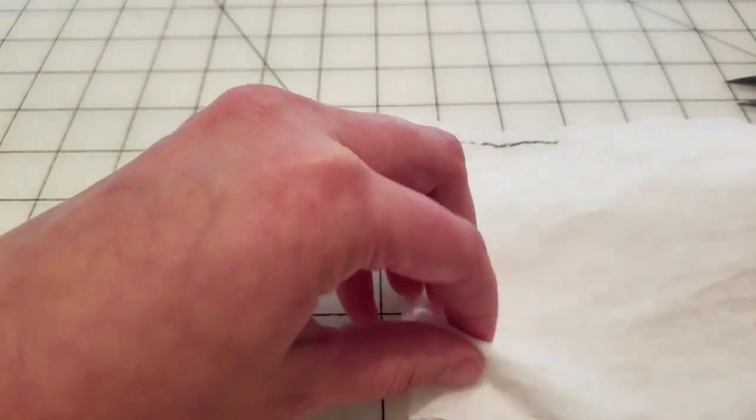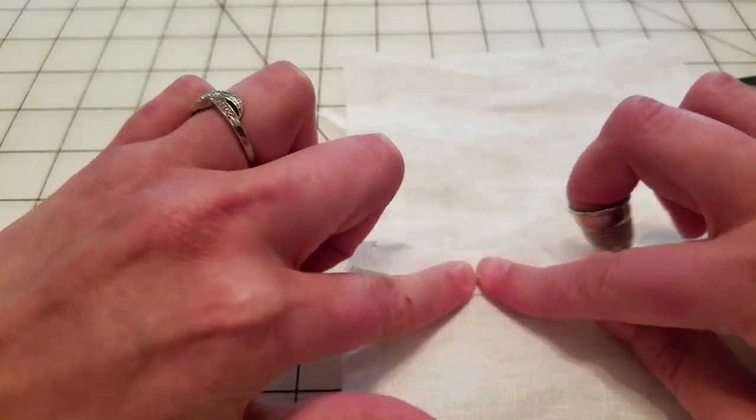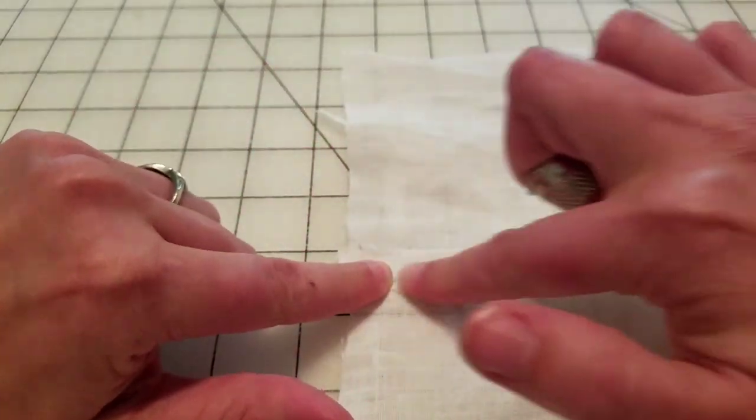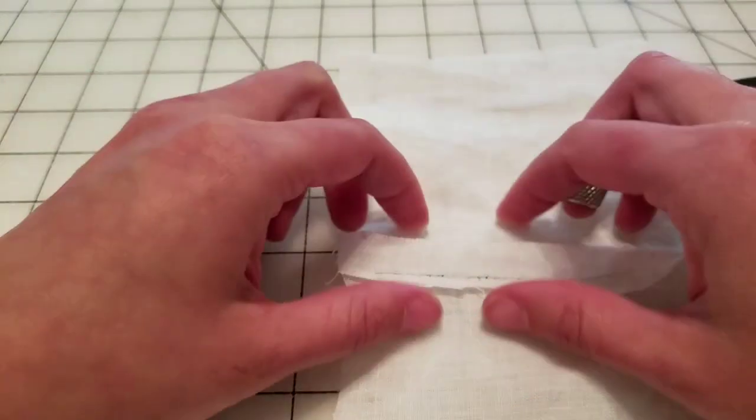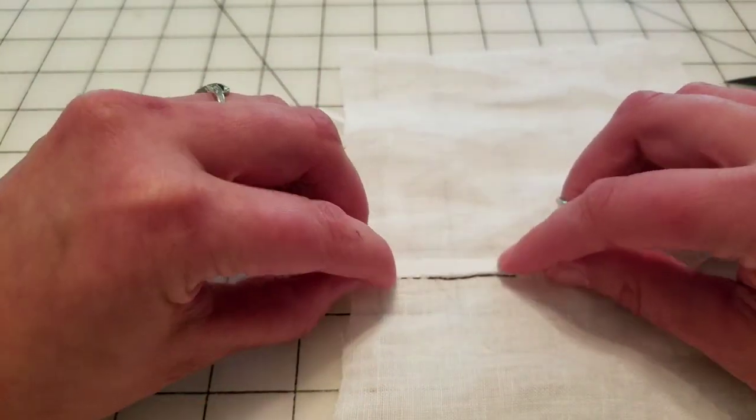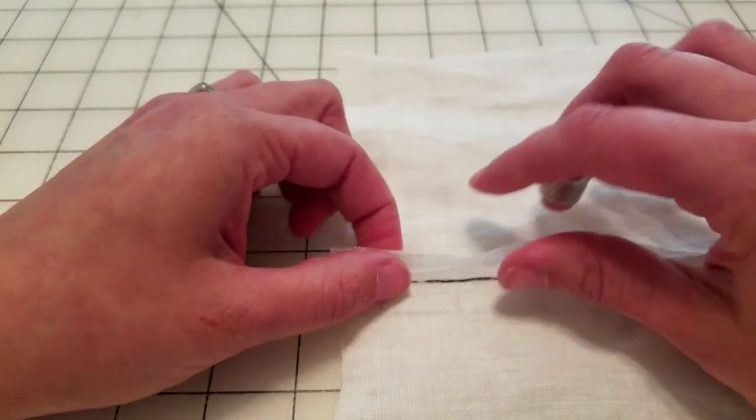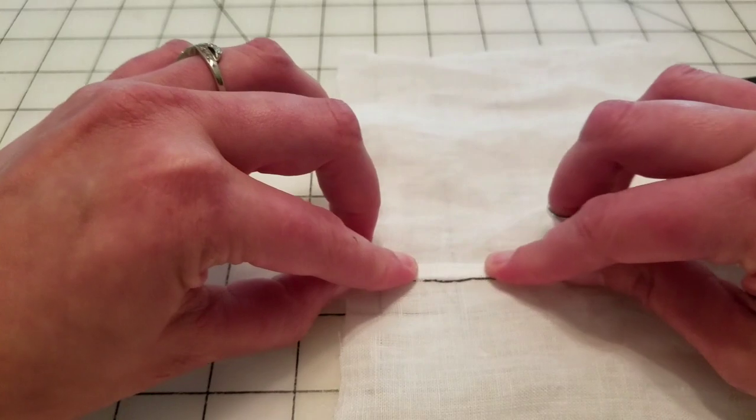Now linen is fabulous for lots of reasons, but in this case, because you can just finger press it. Using the heat of your fingers, you can squash it, press that seam open. Then you can fold this in half.